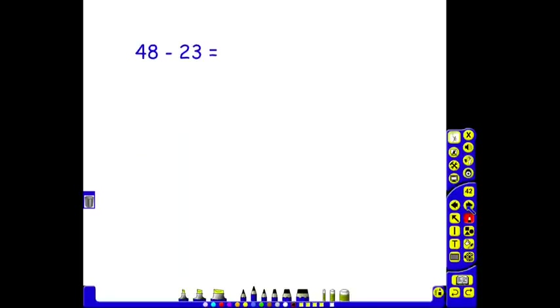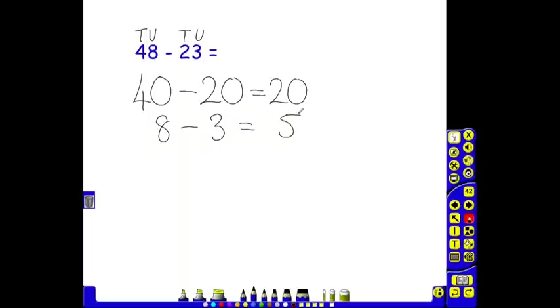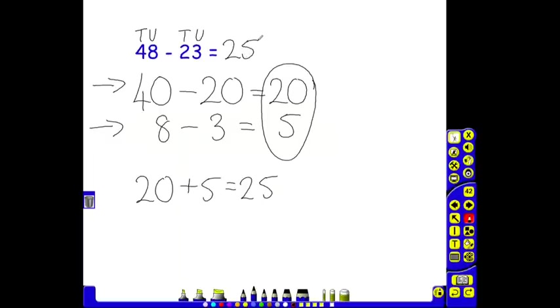48 take away 23. This is another example where we could use partitioning. We've got our 10s and our units, and our 10s and our units. I'm going to take away my 10s first. 40 take away 20 is 20. And then I've got my units. 8 take away 3 is 5. We've split up our 10s and our units. We've now got to put them back together. So 20 add 5 is 25, and that gives us our final answer.